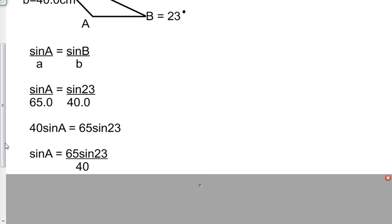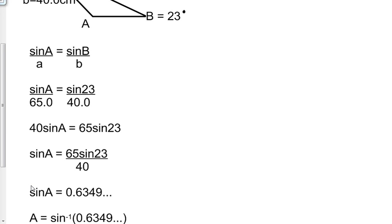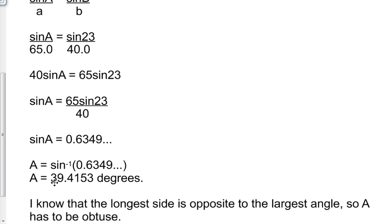Then I divide by 40 to get sine A isolated, so I have 65 sine 23 divided by 40 equals sine A. Sine A equals 0.6349. Then I take the inverse sine to get A equals 39.4153 degrees.